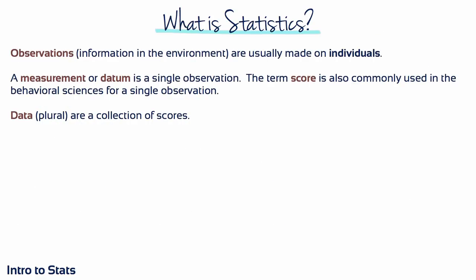Information is collected by observing or measuring something. One observation is referred to as a datum, while a collection of observations or measurements are called data.